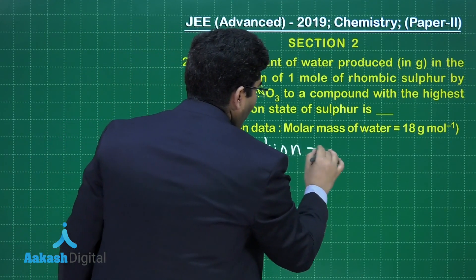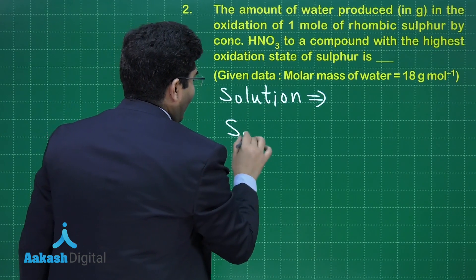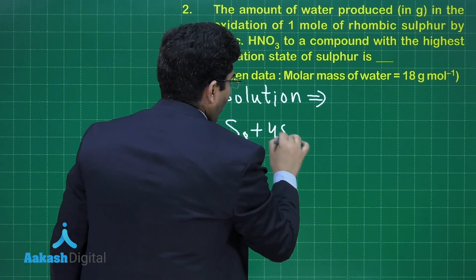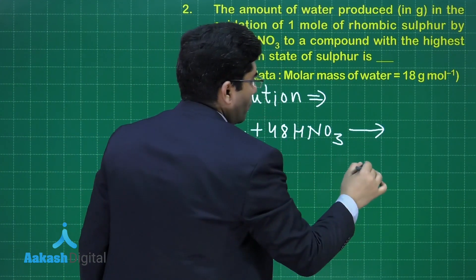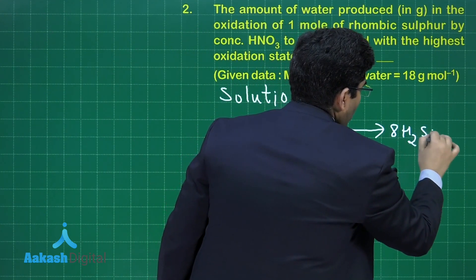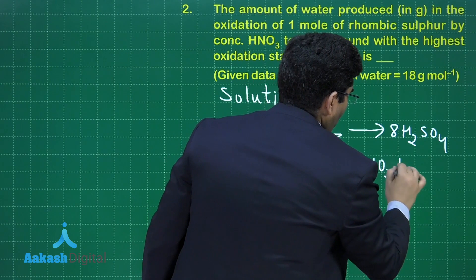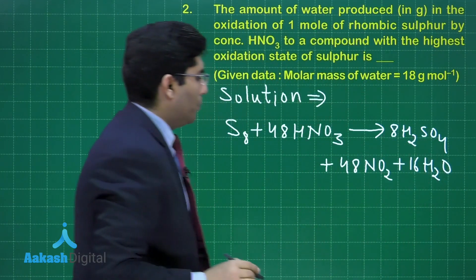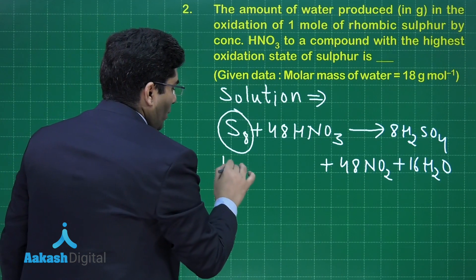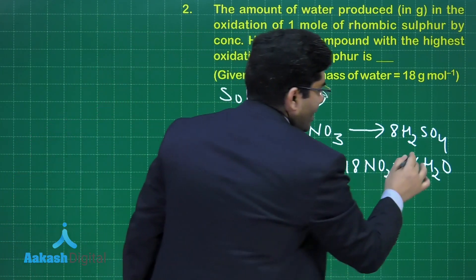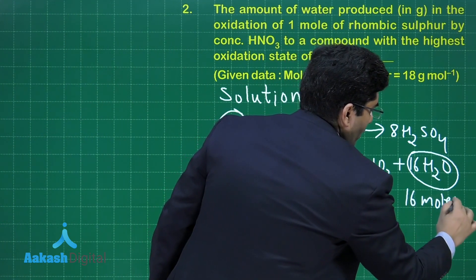For the solution, we have to write down the chemical equation which is involved. So, it is S₈ + 48 HNO₃ gives us 8 H₂SO₄ + 48 NO₂ + 16 H₂O. This is a balanced chemical equation, and we can see that from 1 mole of S₈, we are getting 16 moles of water.